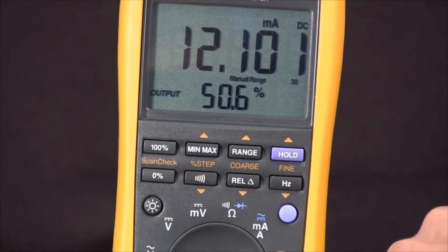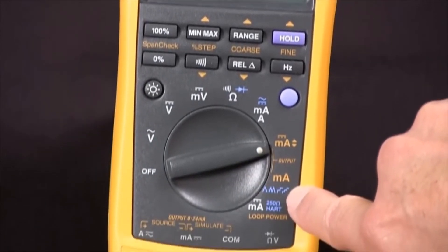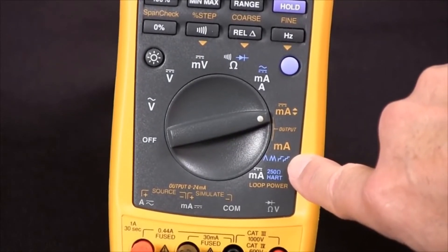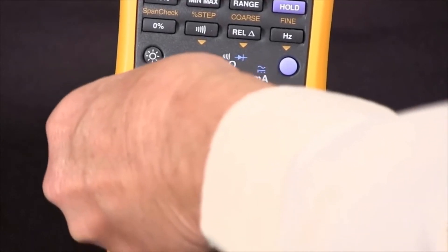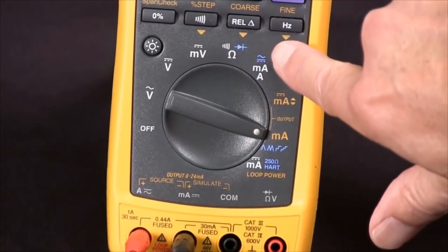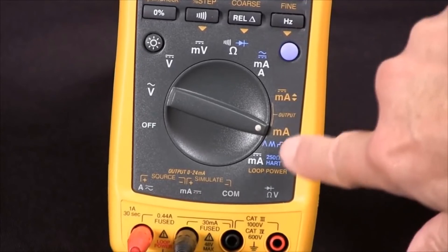If we need to do automatic ramping or step functions, we can go here to the other sourcing position. And with the blue key, we can select one of those four.